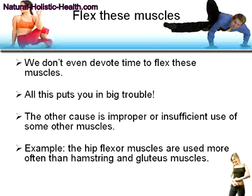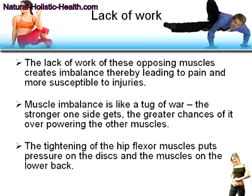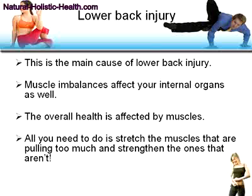The other cause is improper or insufficient use of some muscles. For example, the hip flexor muscles are used more often than the hamstring or gluteus muscles. The lack of work by these opposing muscles creates an imbalance, leading to pain and more susceptibility to injury. Muscle imbalance is like a tug-of-war — the stronger one side gets, the greater the chances of it overpowering the other side.